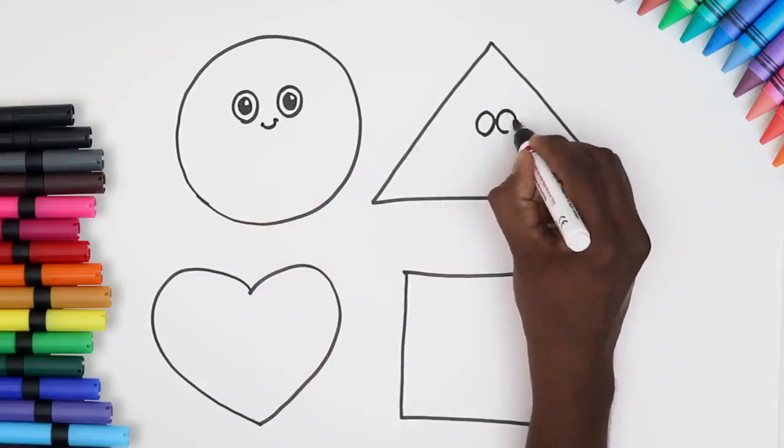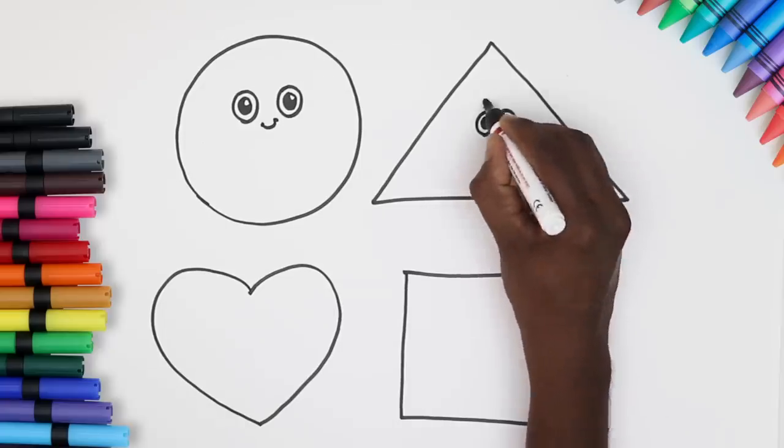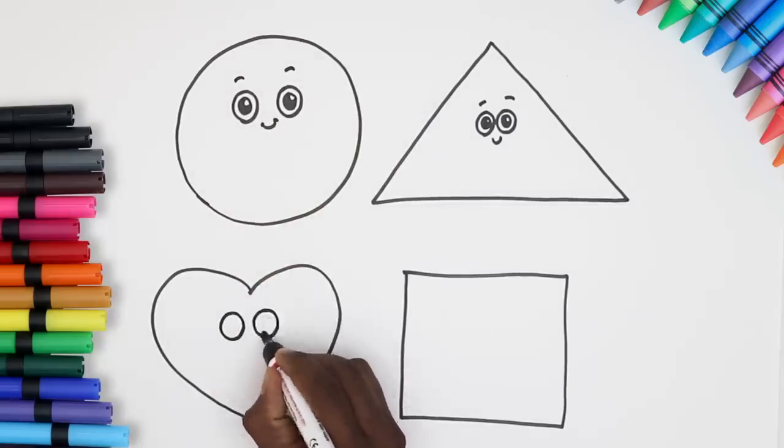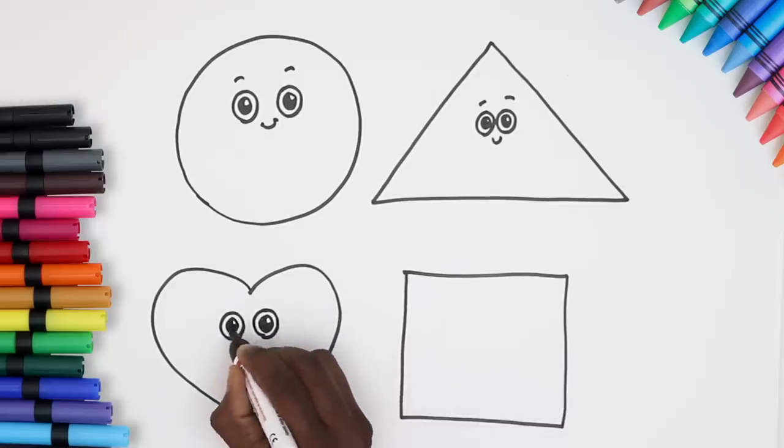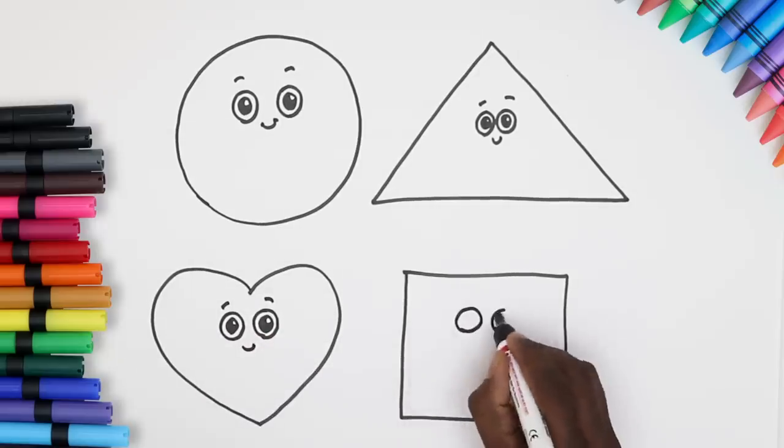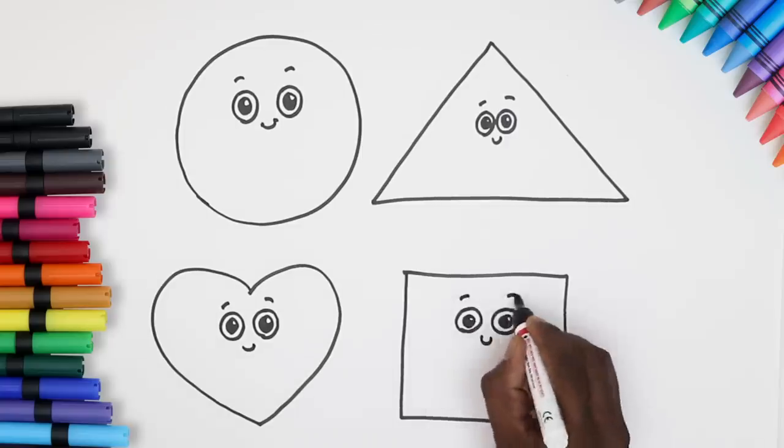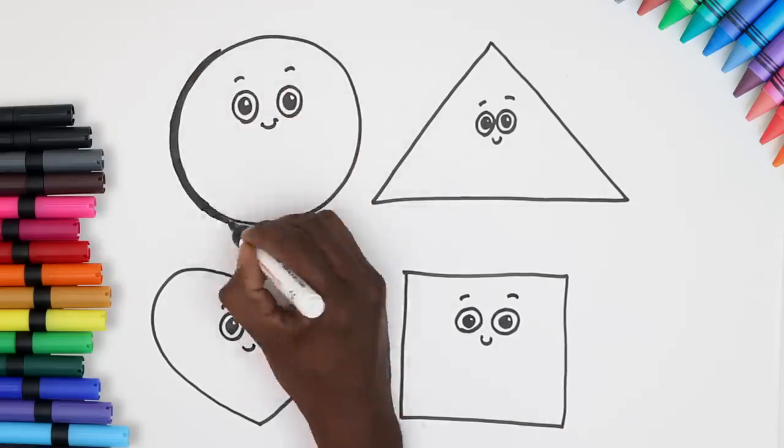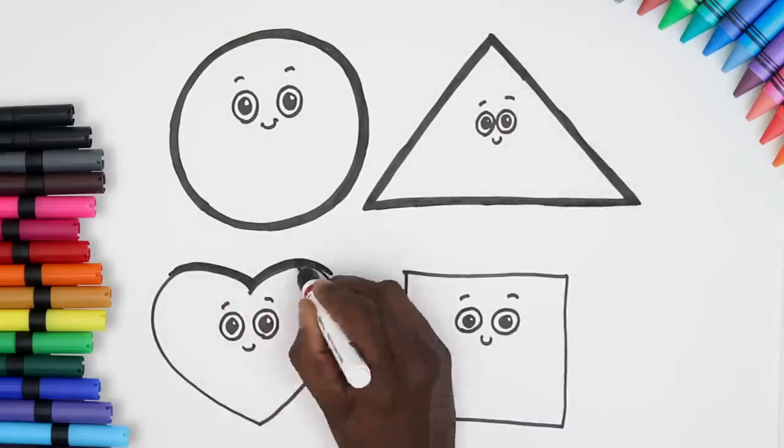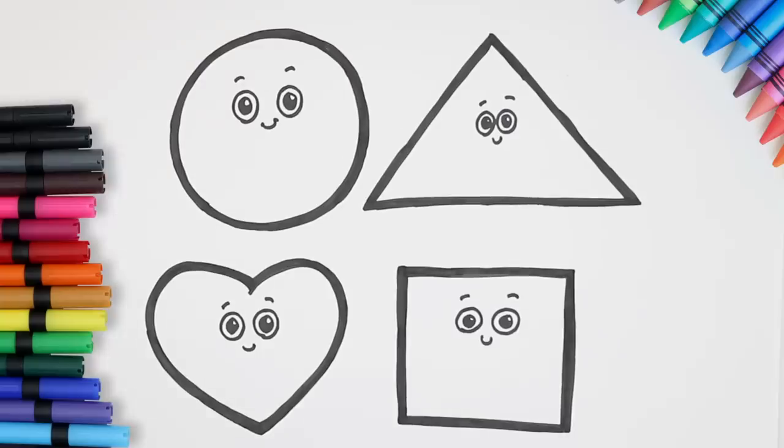A face for our triangle. And don't forget the eyebrows. Next a face for the heart. And the square too. Don't they look so cute? Next, let's do a neat outline for all the shapes. We did a great job!